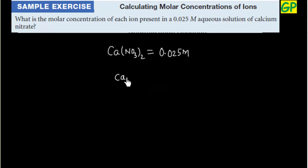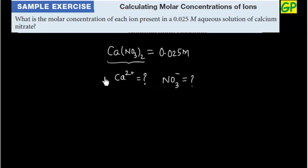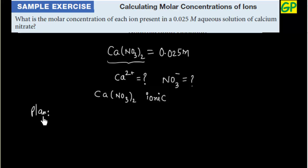We have to calculate the concentration of each ion, that is Ca²⁺ and NO₃⁻. Calcium nitrate is an ionic compound, so when put into water it will dissociate. The plan for this problem is easy: we have to write the dissociation equation and then consider the coefficients, that is 1 and 2.